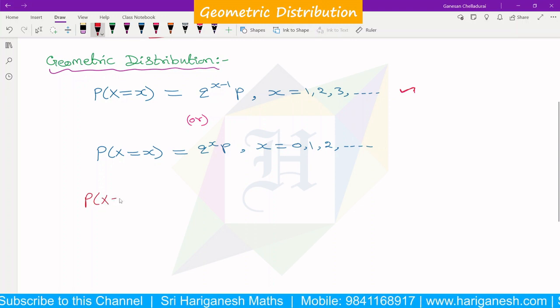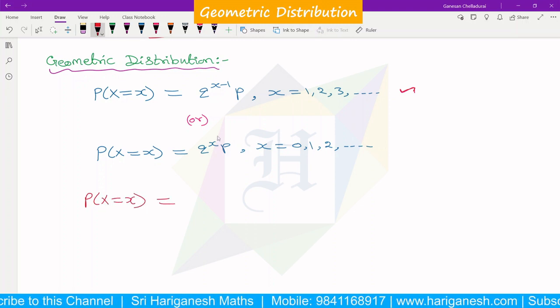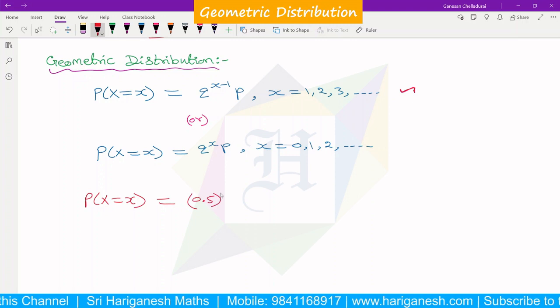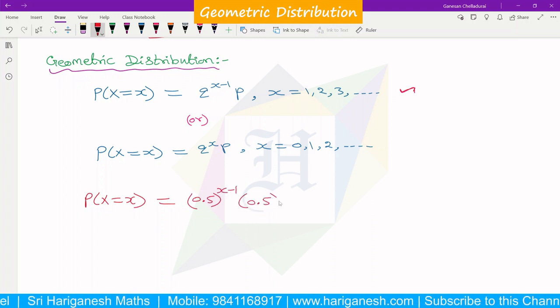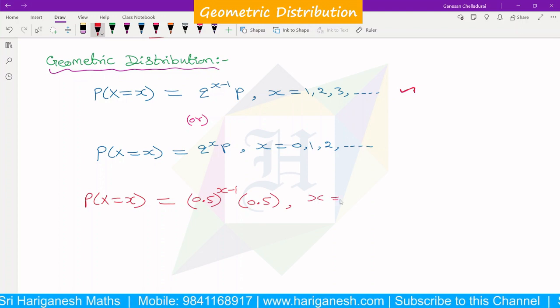P(X=x) equals 0.5^(x-1) times 0.5, where x is 1, 2, 3, etc.